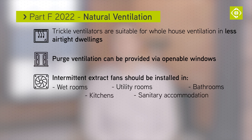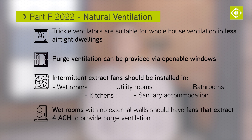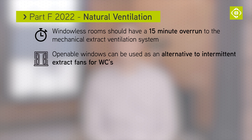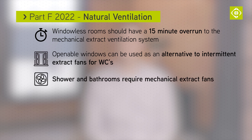Wet rooms with no external walls should have fans that extract four air changes per hour to provide purge ventilation. Windowless rooms should have a 50-minute overrun to the mechanical extract ventilation system. Openable windows can be used as an alternative to intermittent extract fans to WCs; however, showers and bathrooms still require mechanical extract fans.